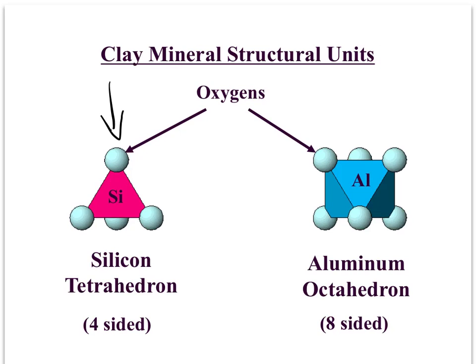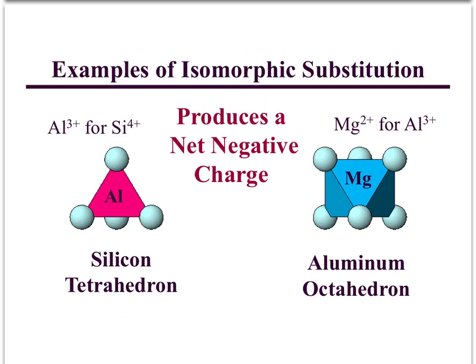The silicon tetrahedron has four sides — one, two, three, and one on the bottom. This is our aluminum octahedron, and we mentioned last time that sometimes you can have magnesium in here as well. That change is really what we're talking about — from one thing inside here to another thing inside here — and this is what gives clay a really interesting feature. Here are our two tetrahedrons and octahedron.